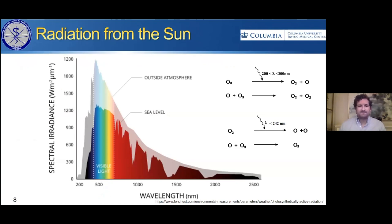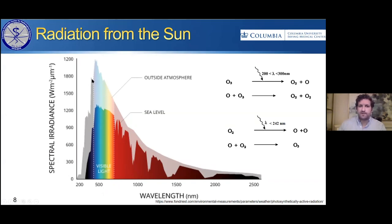Natural sources of ultraviolet light — the primary one is, of course, the sun. The spectrum extends from 200 nanometers, the bottom edge of the UVC, through the rest of the ultraviolet, visible light, and into the infrared. Outside the atmosphere, there are significant amounts of UV all the way down through the UVC. However, by the time that radiation makes it through the atmosphere, it's filtered out by products like ozone. So because of the ozone layer, we don't have any UVC radiation reaching us at the surface of the earth — we do have UVB and UVA, which is why we have to wear sunscreen.